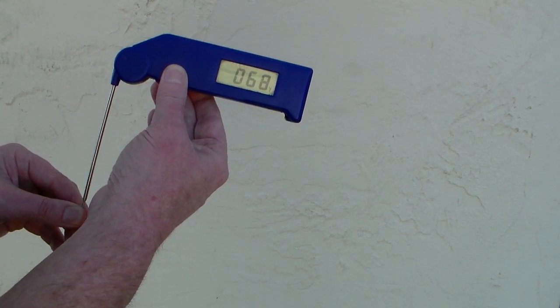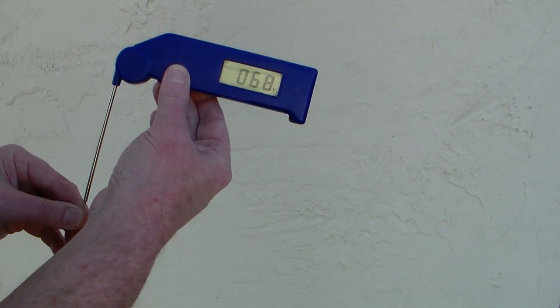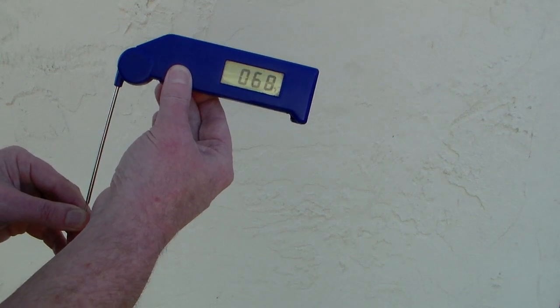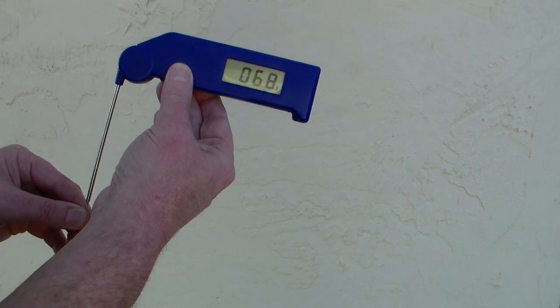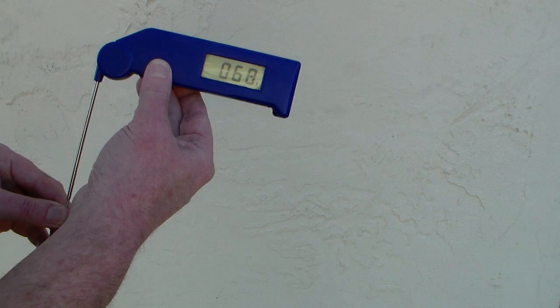Now, a normal person's body temperature is like 98.6. I did this to my wife and hers registered about 93, 94 degrees.